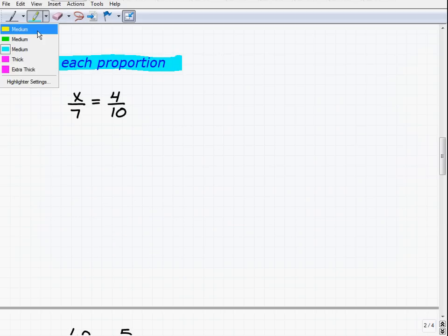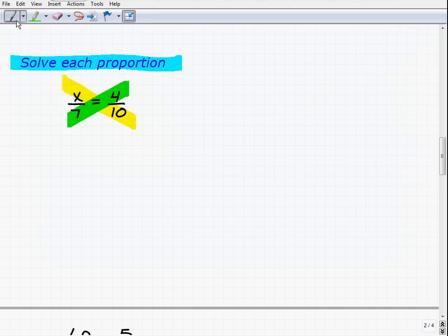Let's do what we were doing in previous problems. We're going to set up the cross products as equal to one another. So 10 times x must equal 7 times 4. We write that as 10x equals 7 times 4, and of course that's 28.